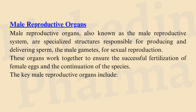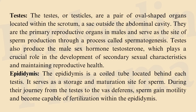Male Reproductive Organs: The male reproductive system consists of specialized structures responsible for producing and delivering sperm. The testes are a pair of oval-shaped organs located within the scrotum, serving as the primary site of sperm production through spermatogenesis, and also produce testosterone. The epididymis is a coiled tube behind each testis that serves as a storage and maturation site where sperm gain motility. The vas deferens is a muscular tube connecting each epididymis to the ejaculatory duct, transporting mature sperm during ejaculation.